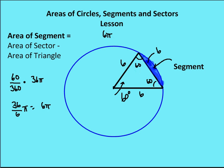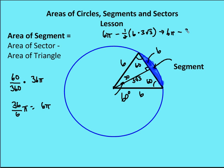Now we find the area of the triangle by drawing an altitude from the center to the chord, which bisects the chord. This gives a 30-60-90 triangle, with half the chord length being 3. So the altitude is 3 root 3. The area of the triangle is one-half times base 6 times height 3 root 3. Subtracting: 6 pi minus one-half of 6 times 3 root 3 gives us 6 pi minus 9 root 3. That is the area of the segment — sector area minus triangle area.